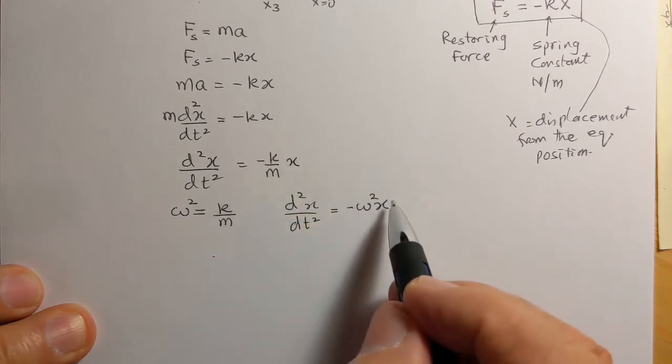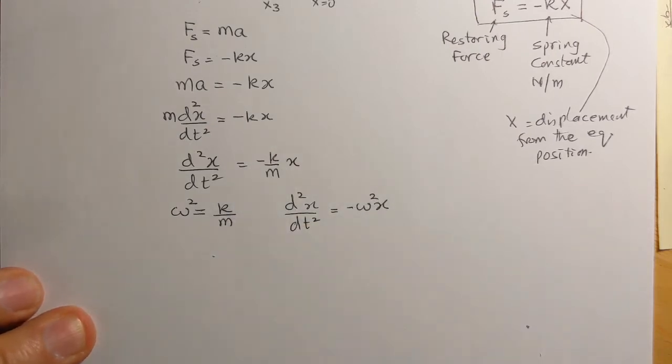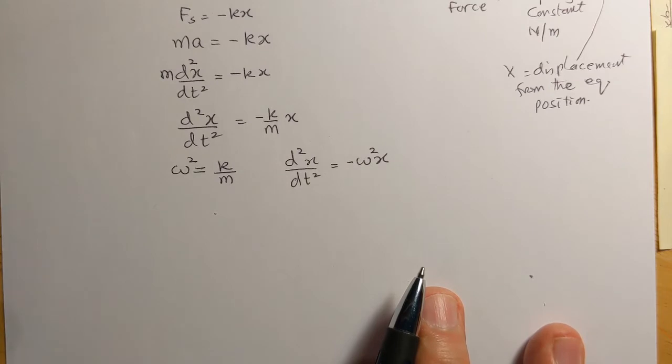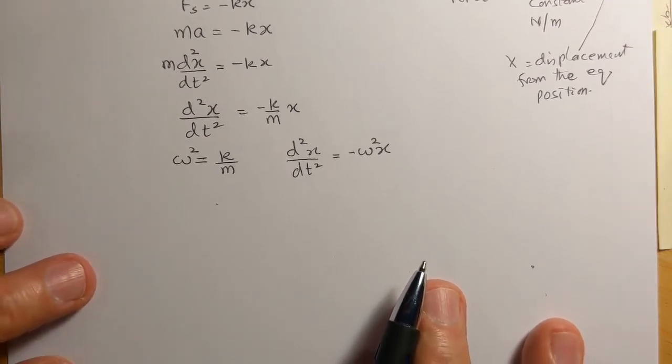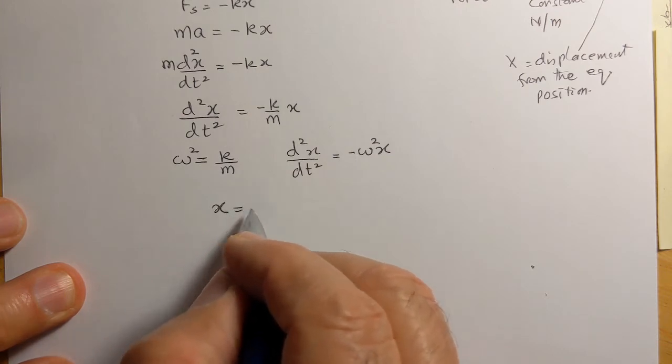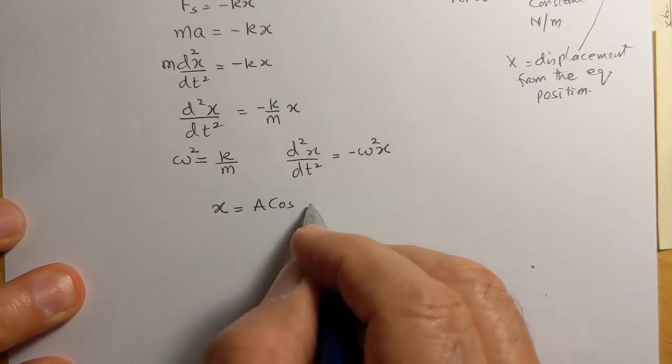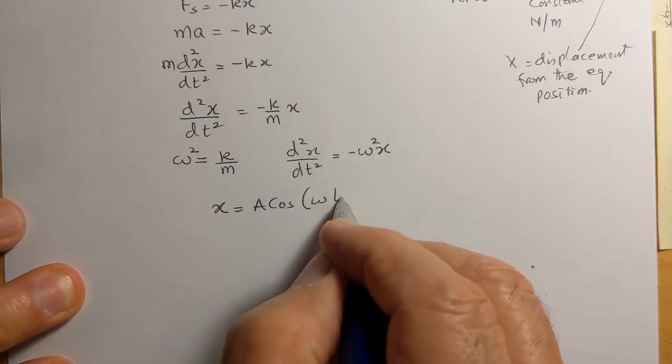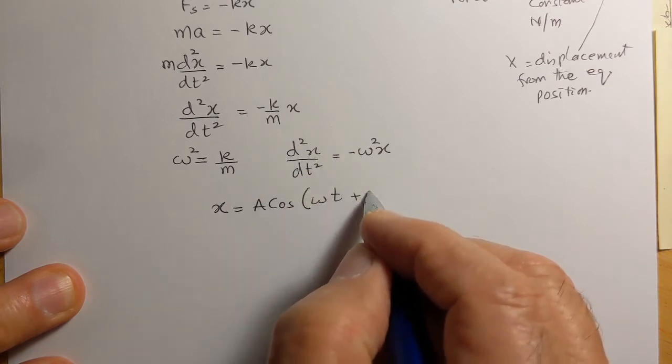we replace k/m with ω². Now, equations of this type are usually solved by cosine functions. So we can assume that it's solved by a function that looks like A cosine, and it's omega, and it's a function of time, so it will be ωt, and there can also be